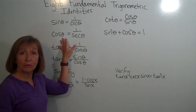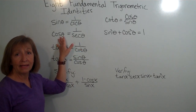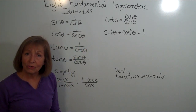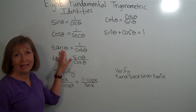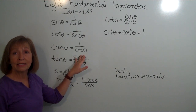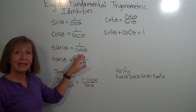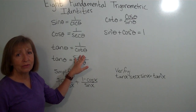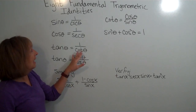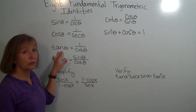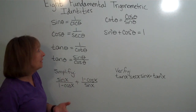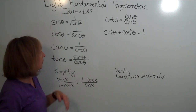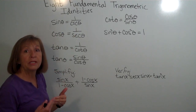Cosine theta is the reciprocal of secant theta, so cosine theta equals 1 over secant theta, and secant theta equals 1 over cosine theta. Tangent theta is the reciprocal of cotangent theta, so tangent theta equals 1 over cotangent theta, and cotangent theta equals 1 over tangent theta. We usually write the most comfortable trig function equal to the reciprocal of the trig function we don't use very often — basically because they don't have their own calculator keys and aren't in the original definition.